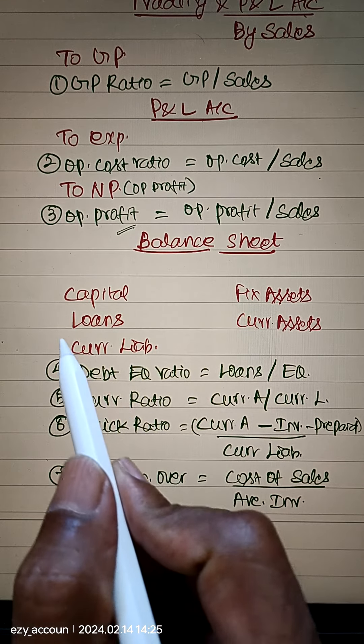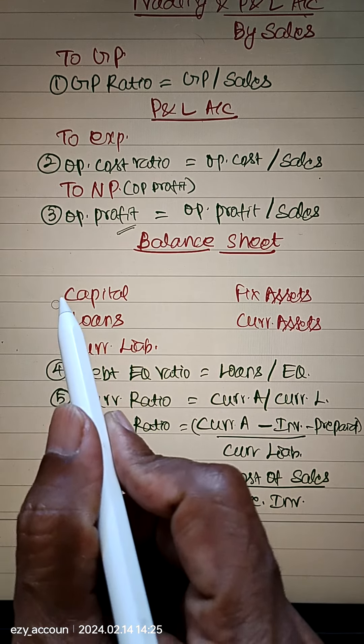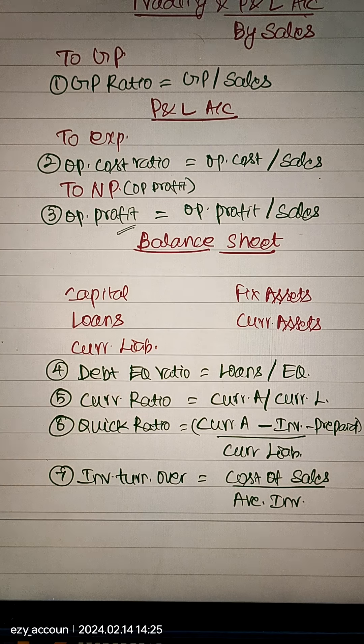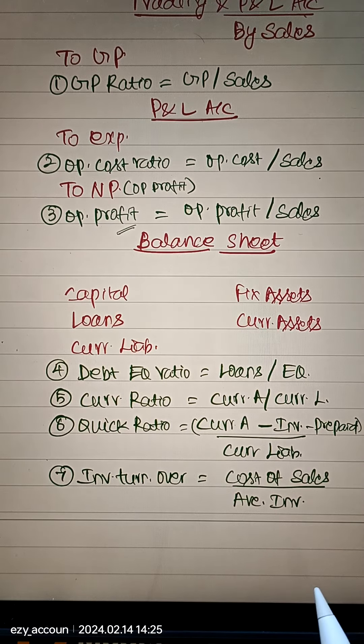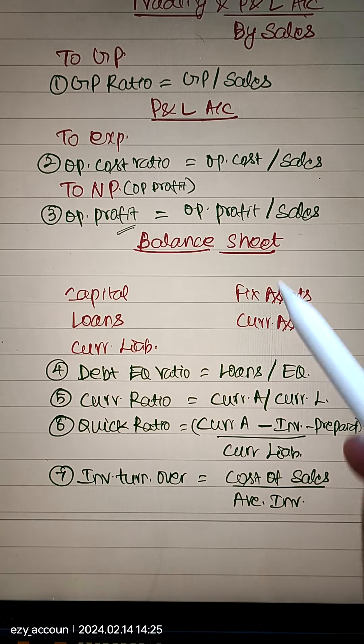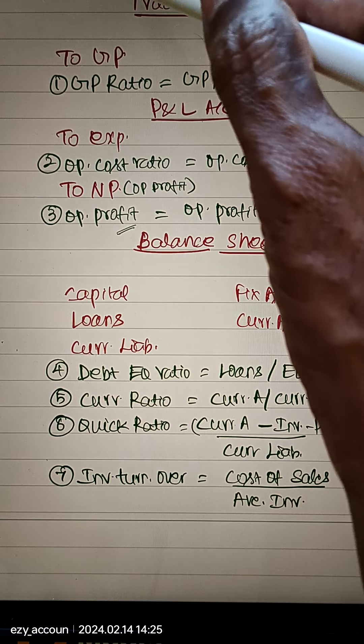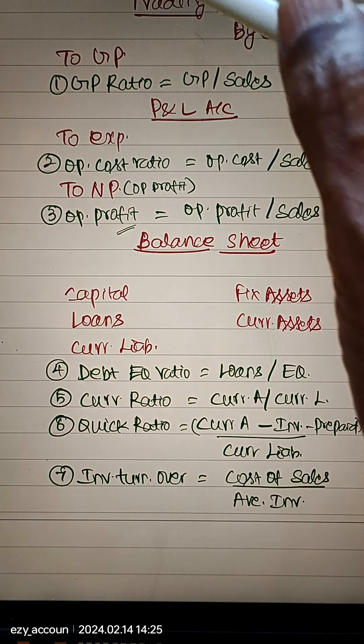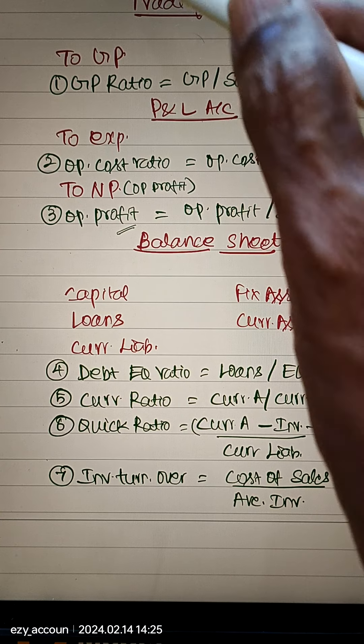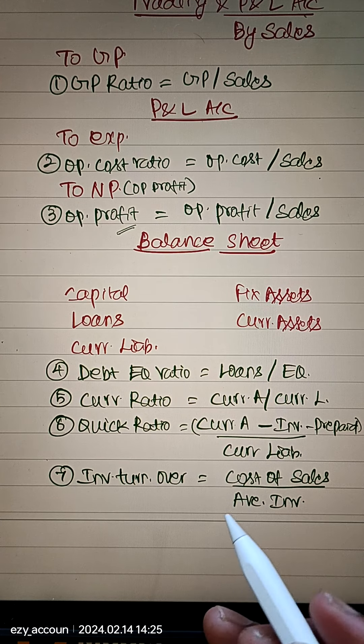Debt Equity Ratio is equal to Loan divided by Capital. Then Current Ratio is equal to Current Assets divided by Current Liabilities.